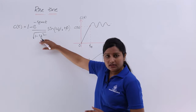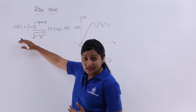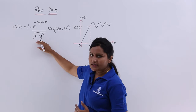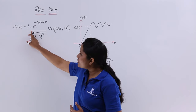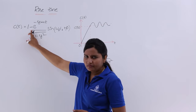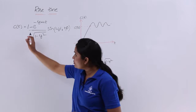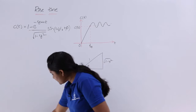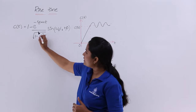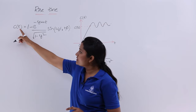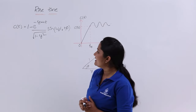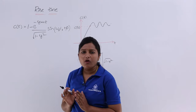I have already given a video related to the under-damped system. The response of this under-damped system is: C(t) = 1 minus e^(−ζωₙt) divided by root of (1 − ζ²), multiplied by sin(ωd·t + φ). Keep in mind there is no 'whole divided by' — the division applies only to the exponential term, not to the entire expression. This is the response of the under-damped control system.